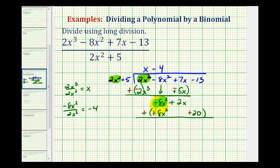So now we can just add vertically. This would be zero. Bring down the x term. So we have 2x. Then we have negative 13 plus positive 20. That's going to be plus 7.